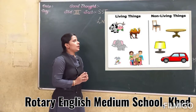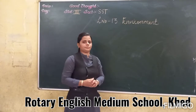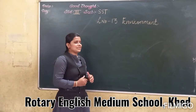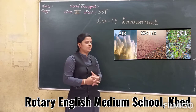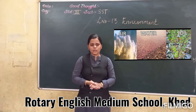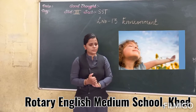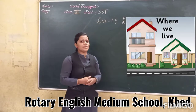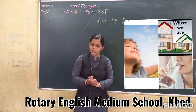Got it, my children? I hope we have understood the concept of environment. Now my dear children, an environment consists of three elements — that is air, water, and soil. The air we breathe in, the water we drink, and the place where we live — this all forms an environment.